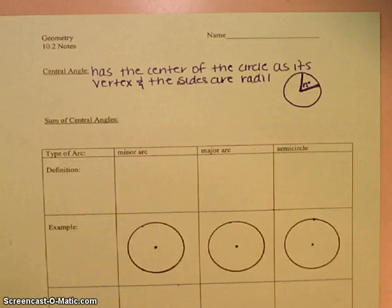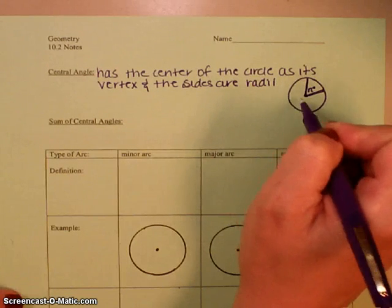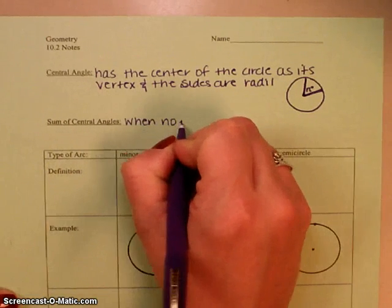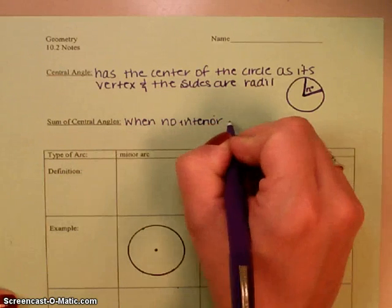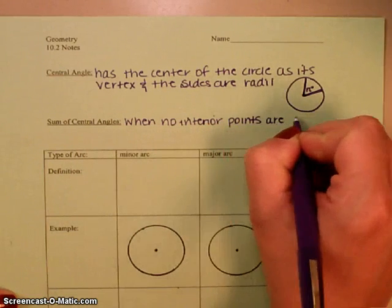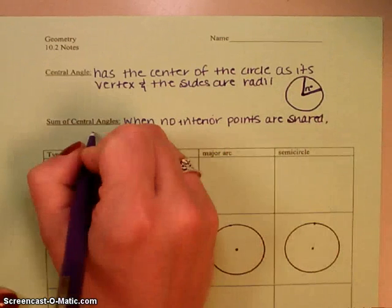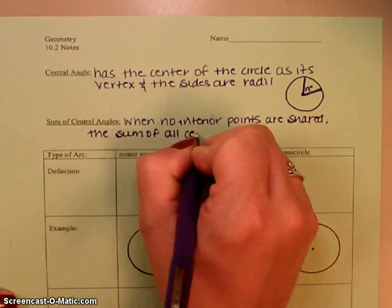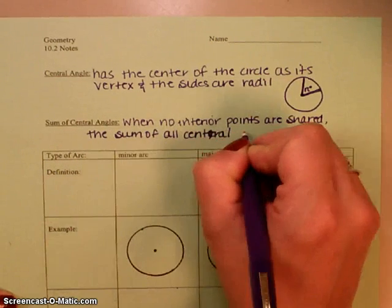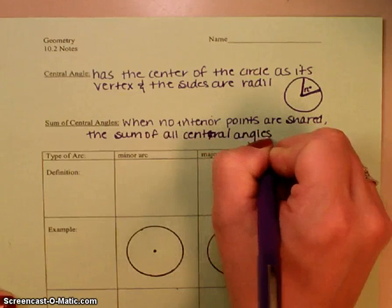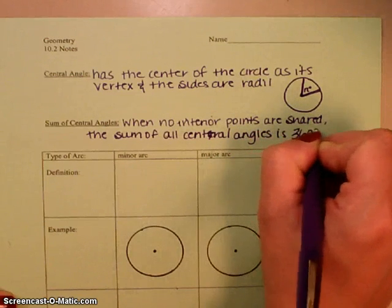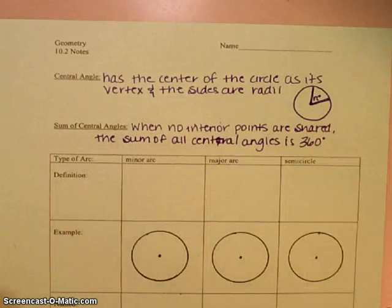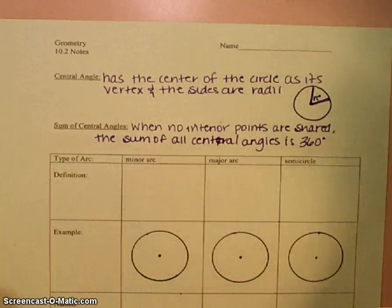Then, the next thing, the sum of central angles. So let's say we had all these different central angles in here. You guys can probably figure this out. But when no interior points are shared, the sum of all central angles is 360. And that kind of makes sense, because if you go all the way around the circle, it's 360 total degrees in a circle. So that's kind of where our focus is going to lie today.